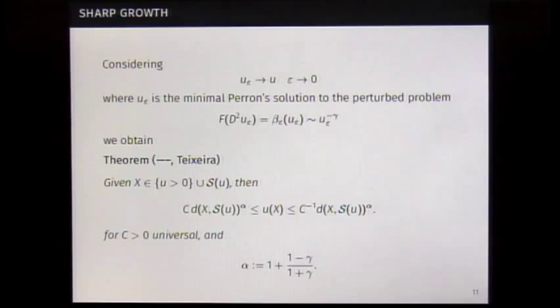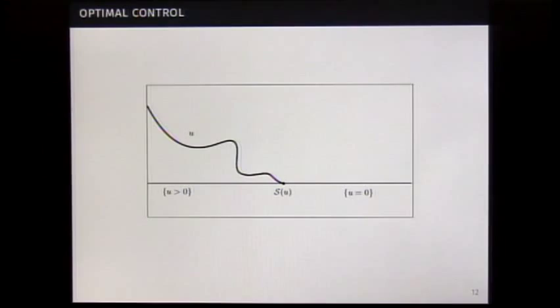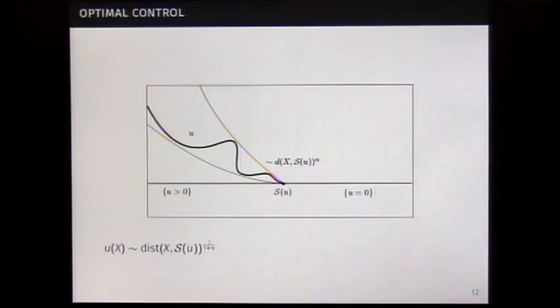If you add some conditions about that solution, which means if you consider solutions as a limit of Perron solutions, we can obtain a lower control. With the regularity, we can have an upper control for points close to the singular set. And the degree of the control is given by the same exponent as in our last result. Geometrically, we have that situation.